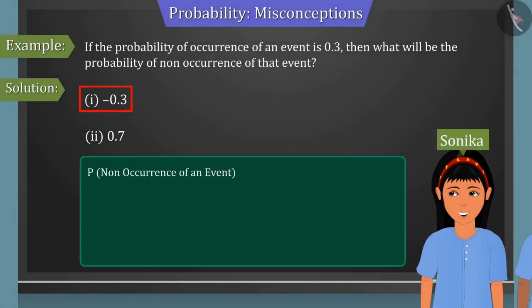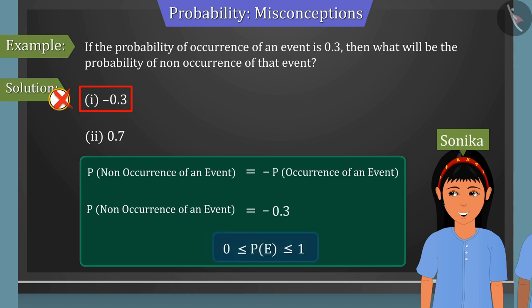According to Sonika, the probability of an event not occurring is the opposite of the probability of it occurring. So, she considers minus 0.3 as opposite to 0.3. This is the wrong answer. Because the probability is always between 0 to 1. That is, it can neither be negative nor be greater than 1.